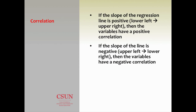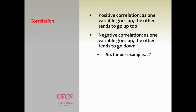If the slope of this line goes from lower left to upper right, then the variables have a positive correlation. If the slope goes upper left to lower right, then the variables have a negative correlation. So by drawing this line, you know whether the correlation is positive or negative, and then we follow up to get that number to define it better.